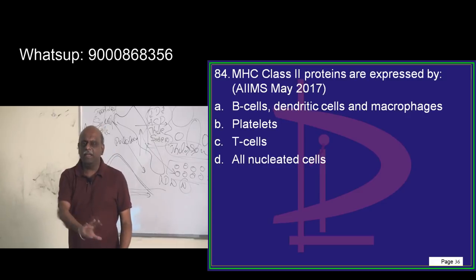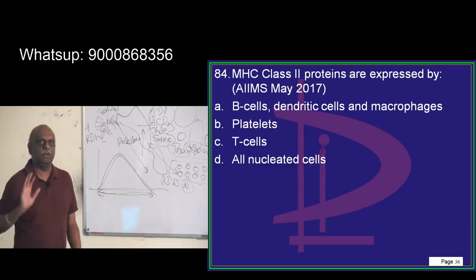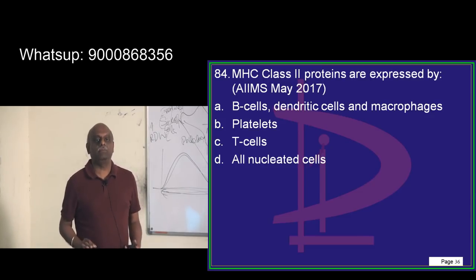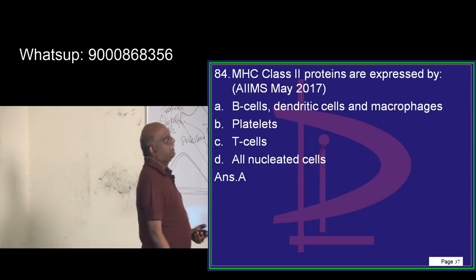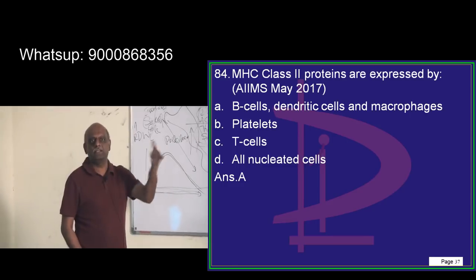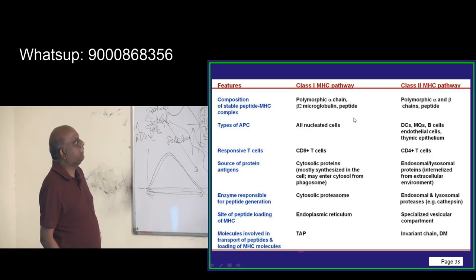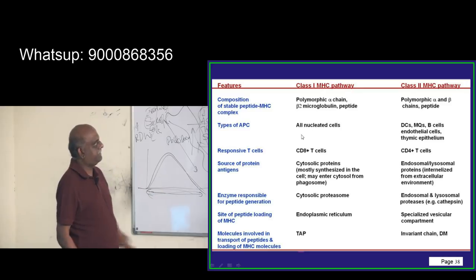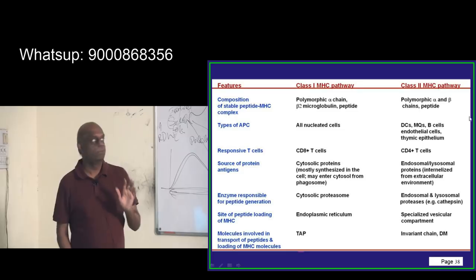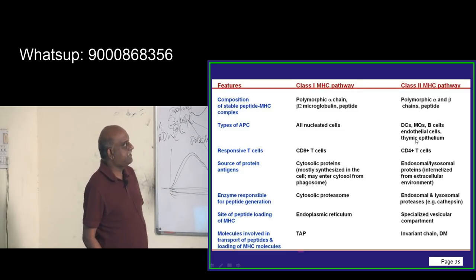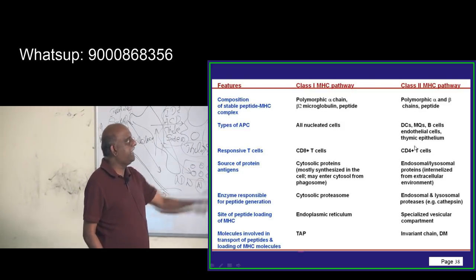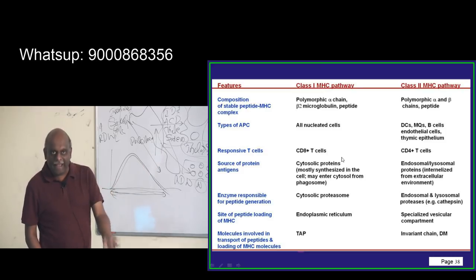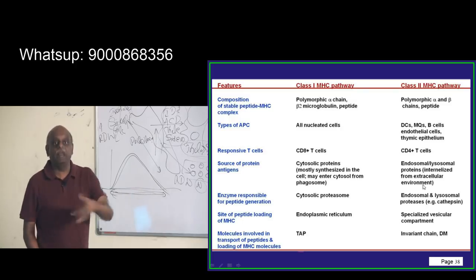MHC class 1 and MHC class 2 — which chromosome are they located on, what are the differences, and on what type of cells are they present? You need to know 5-6 key points about the major histocompatibility complex. MHC class 2 proteins are found on B cells, dendritic cells, and macrophages. All nucleated cells have class 1. Class 2 is found on dendritic cells, B cells, endothelial cells, and thymic epithelium. Class 1 is responsive to CD8+ cells whereas MHC class 2 is responsive to CD4+ cells.